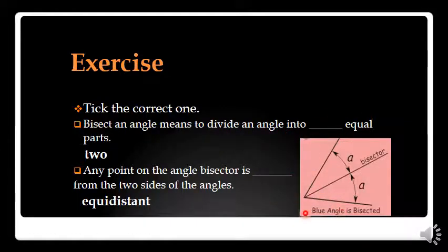Bisect an angle means to divide an angle into dash equal parts. Here we see that this is an angle, and this is an angle bisector which is passing from the mid of this angle. This middle line is the angle bisector which is passing from the mid of this angle.